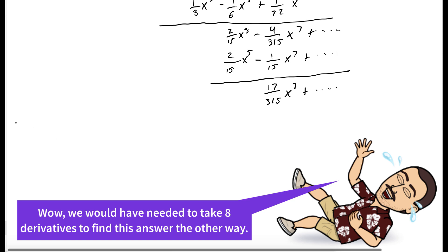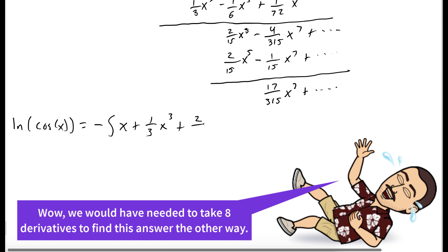We know that the natural log of cosine of x is the integral of negative tangent of x, or equivalently negative the integral of tangent of x. So we evaluate the integral of the first four terms of the Maclaurin series for tangent of x. Another way to do this problem would be to take derivatives of natural log of cosine of x and find the terms that are not zero when evaluated at zero, but that's actually pretty messy.